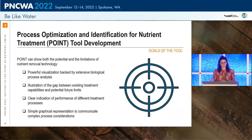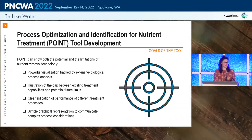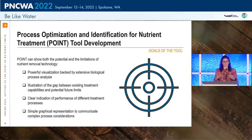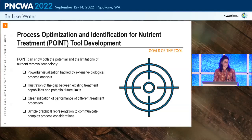This is the introduction of the Process Optimization Identification for Nutrient Treatment — the Point tool. The goal is to have a powerful visualization tool built on process modeling and typical conditions seen at wastewater facilities. The Point tool illustrates the gap between existing treatment capabilities and future potential limits, and provides a clear indication of performance of different treatment processes — for example, what is the maximum capacity of an MLE process to treat influent wastewater compared to a four-stage Bardenfoe process?